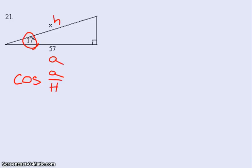In this case, it's cosine. So our setup will be the cosine of 17 equals the adjacent, which is 57, over the hypotenuse, which is X.